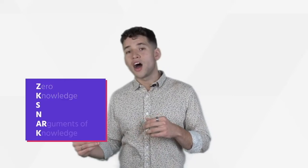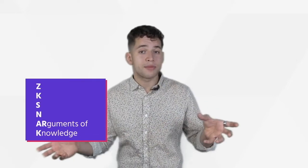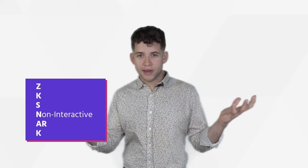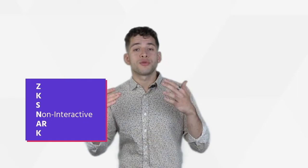We're going to skip to the end, with the AKs being arguments of knowledge — simply the mathematical proofs and statements that you make. But the S and the N is what's really interesting. S means succinct: the proofs are very small and they can be verified in constant time. N means they're non-interactive, so the prover and verifier don't need to exchange any information directly, but do it through a shared transcript.